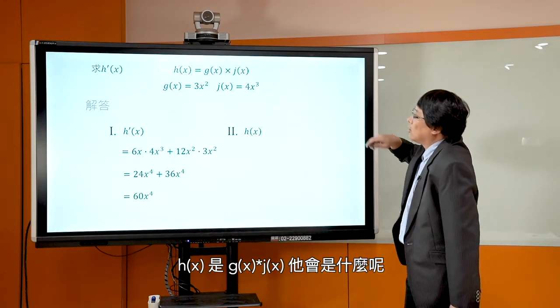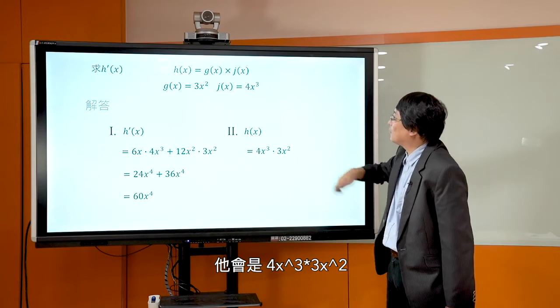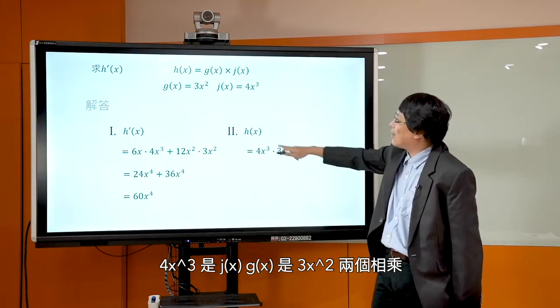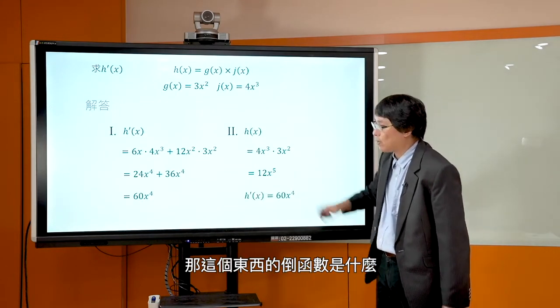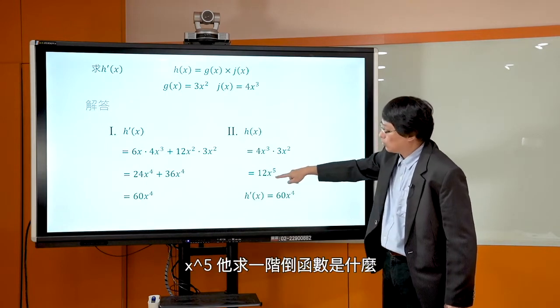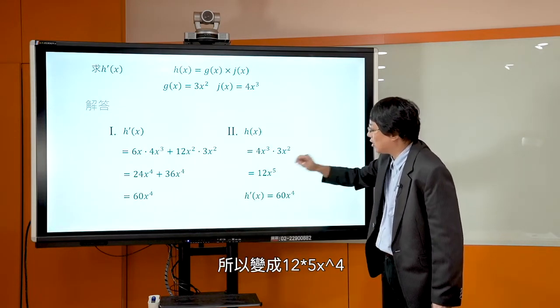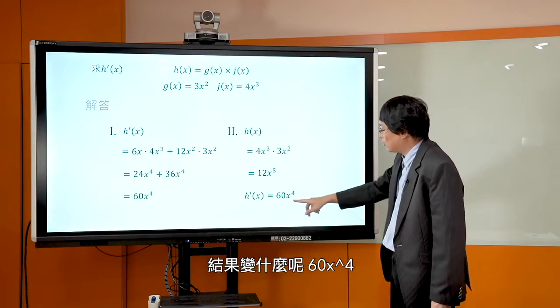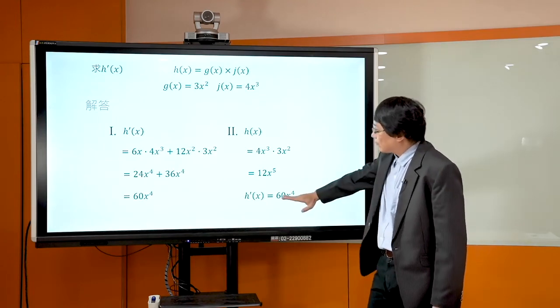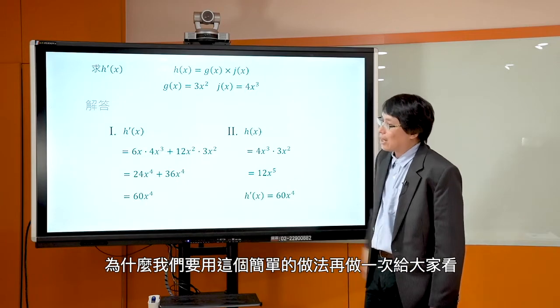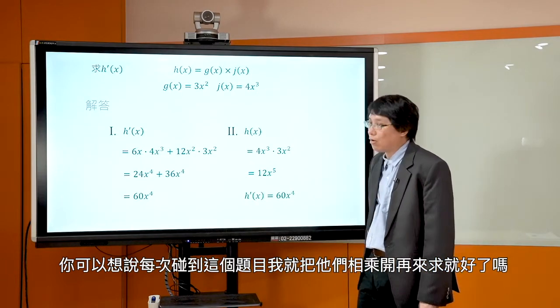那我再重复一次，为什么我们要用这个简单的做法再做一次给大家看？要验证说这个公式是对的。那为什么我们还需要这个公式？你可以想说我每次碰到这个情形我就把它相乘开来然后再求就好了吗？可是有些时候相乘开来反而比较复杂，所以你还是要知道这个公式。碰到复杂情形你就用这个，简单的情形像这个时候你就用右边这个，用这个第二个的方式就会比较简单。